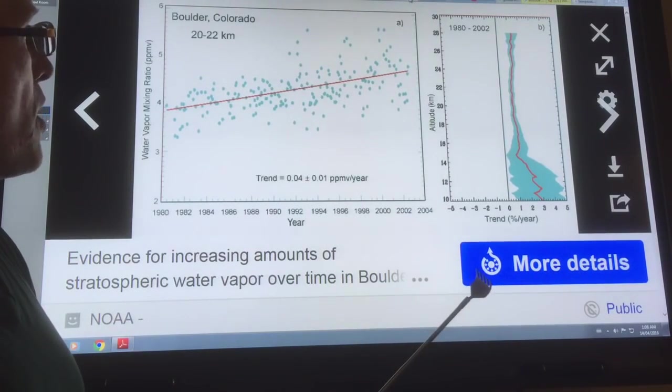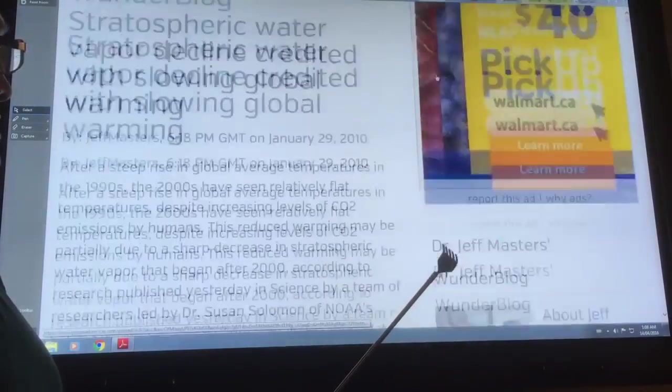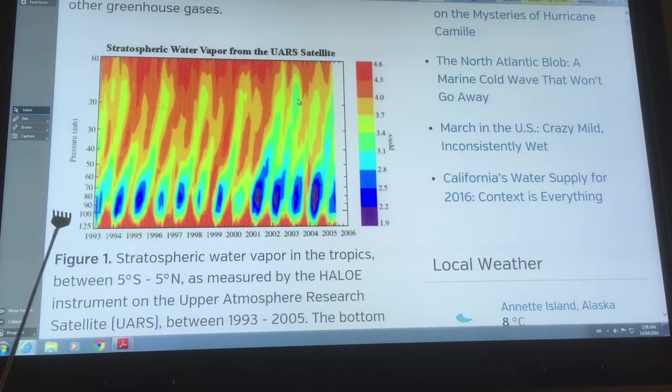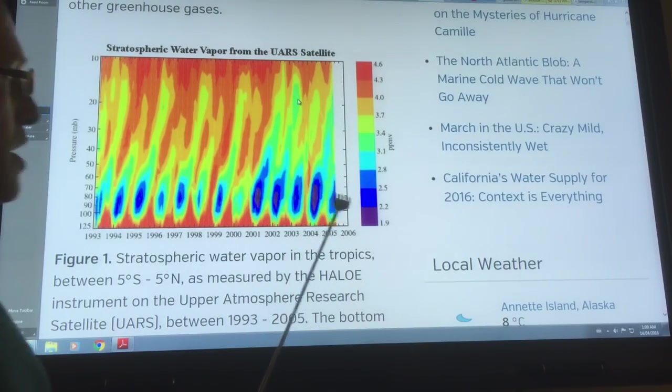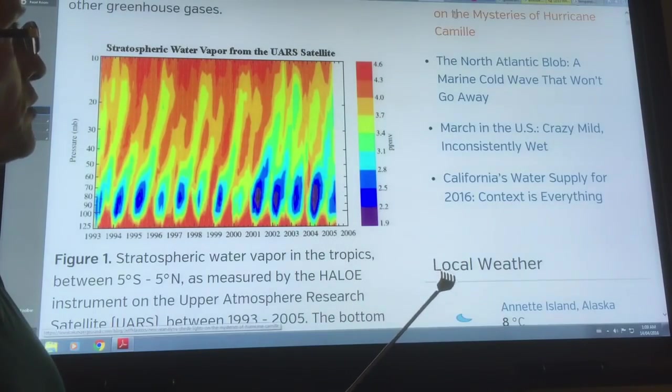There's more water vapor up there, but this doesn't happen all over the planet. If you go near the equator, this is stratospheric water vapor from 93 to 2006. There's a lot of water vapor in the El Nino in 98, 99 going up into the stratosphere, but subsequent years there was less water vapor at lower latitudes. So the water does depend on where you are, whether it's increasing or decreasing in the stratosphere.